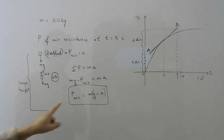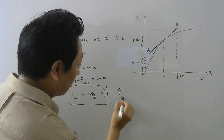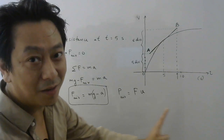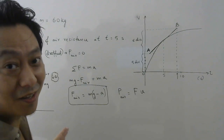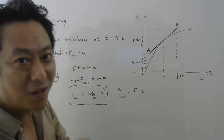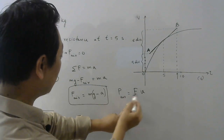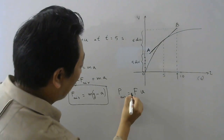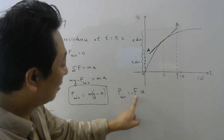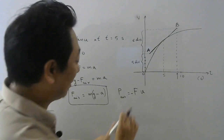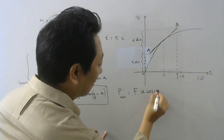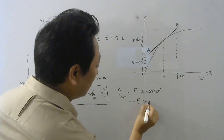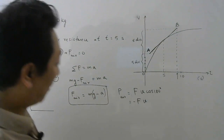Since they want the power of air resistance, power equals force times velocity. No need to write cos theta explicitly, but in this one-dimensional motion the force of air resistance is upward while the velocity is downward, so there should be a minus sign because the angle between them is 180 degrees. Cos of 180 degrees equals minus 1. So the power of air resistance is minus F times v.